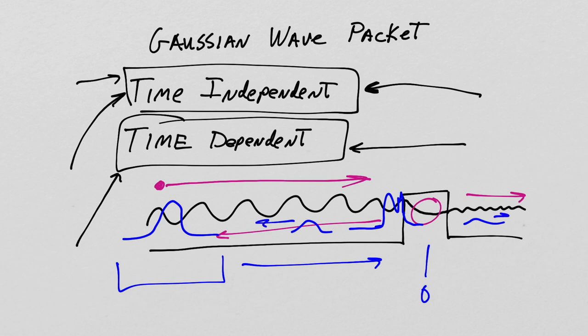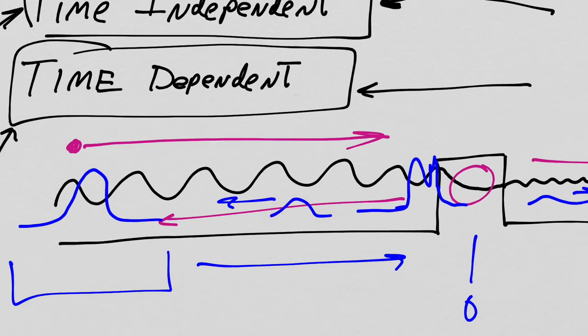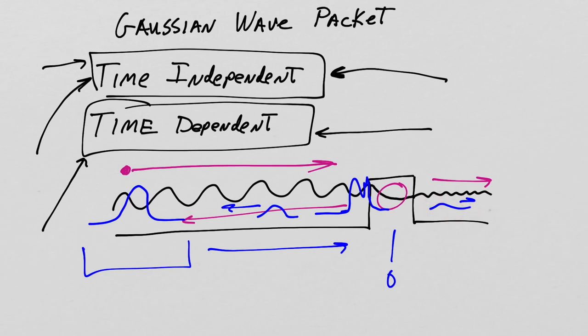The wave packet interacts with the barrier — some of it bounces back and some of it penetrates — and now you have two wave packets moving in two different directions. The probability is still interpreted the same way: one portion of the wave function gives the probability of finding it reflected, the other gives the probability of finding it transmitted. The wave function is a function of time, so you need to know what time you're asking about.